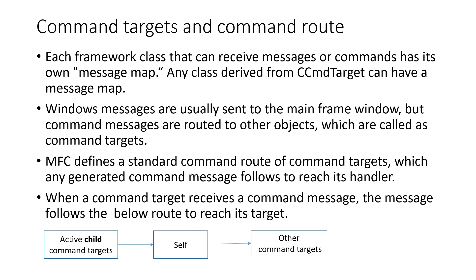An interesting point is about command targets and command routing. Each MFC framework class that can receive messages or commands has its own message map — every class derived from CCommandTarget can have one. Windows messages are usually sent to the main frame window, but command messages are routed to other objects called command targets. The objects that handle command messages are called command targets.